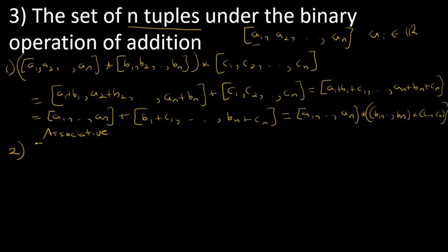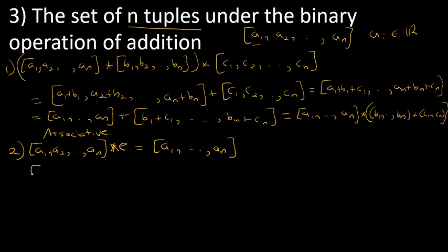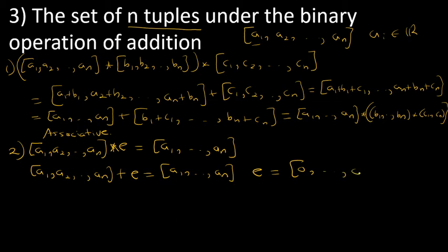Let's find out the identity E. If you take any element (a1, a2, ..., an) and do the star operation with E, you should end up with the same element. Since the star operation is usual addition and the vectors consist of real numbers, E would be the zero vector (0, 0, ..., 0). So the identity in this group is the zero vector.